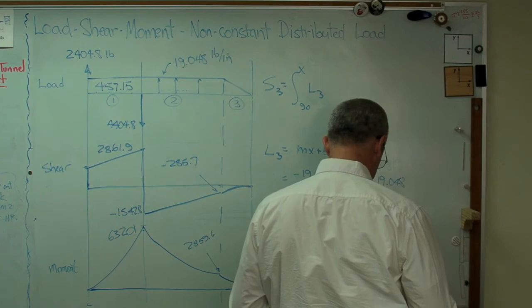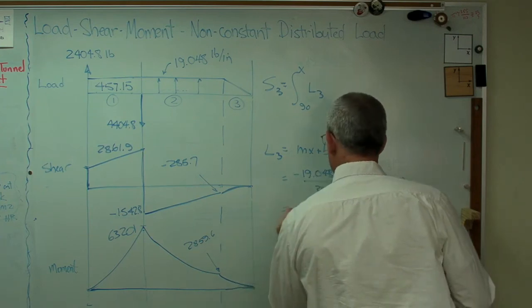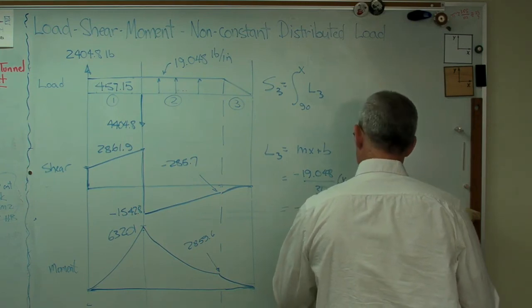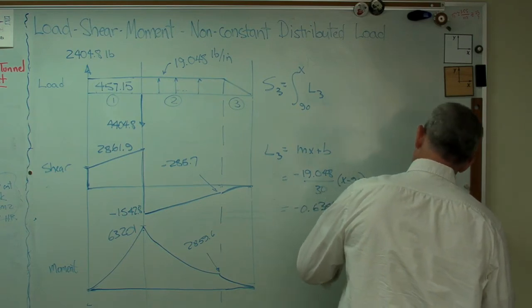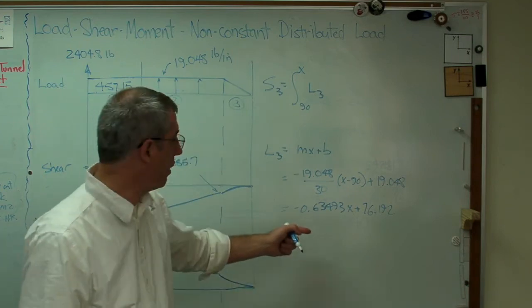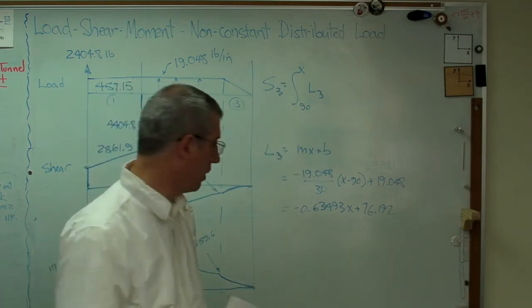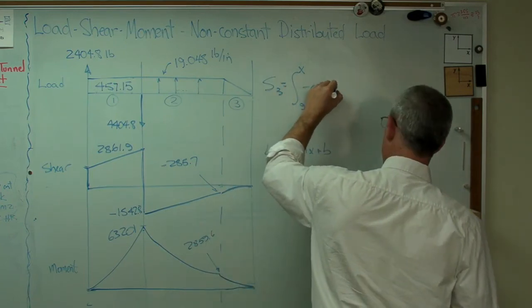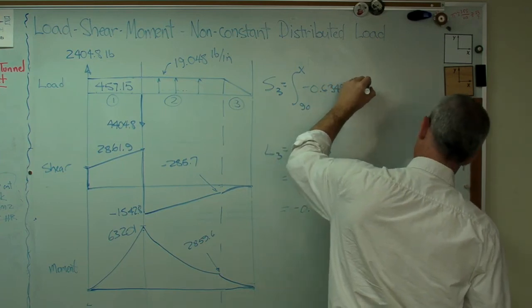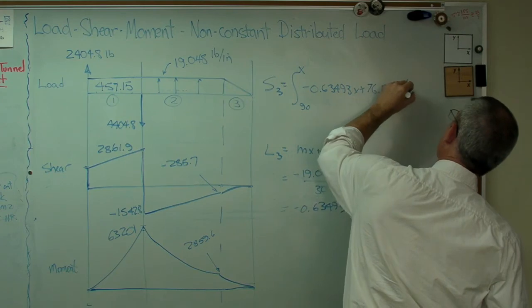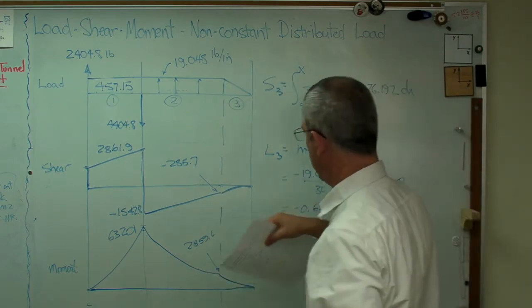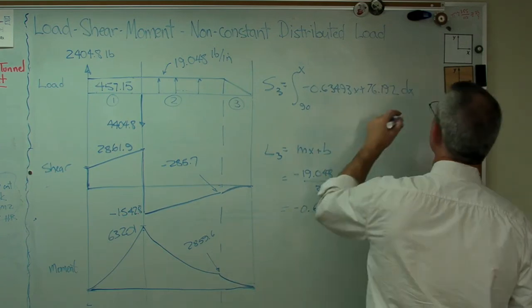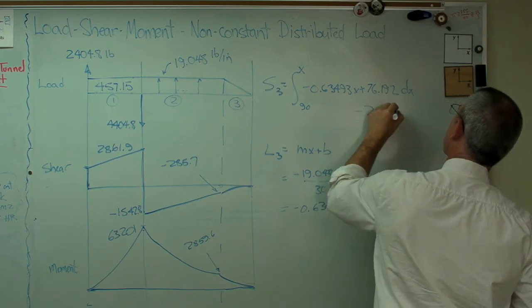minus 0.63493x plus 76.192. Now that's not at all intuitive. I never would have guessed just by looking at it. That's what the equation of that line was, but that's what it is. Minus 0.63493x plus 76.192 dx. But I've got to have the offset right there. So I've got to have that minus 285.7.